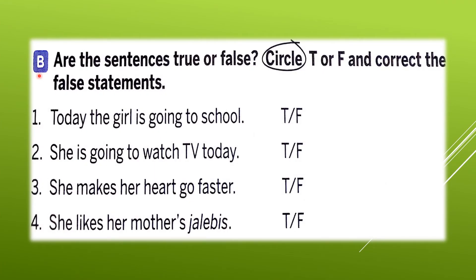Now let us do question number B: Are the sentences true or false? We have to look at these sentences and say true or false. Circle T for true or F for false, and correct the false statements. If the answer is true, circle T. If the answer is false, circle F.